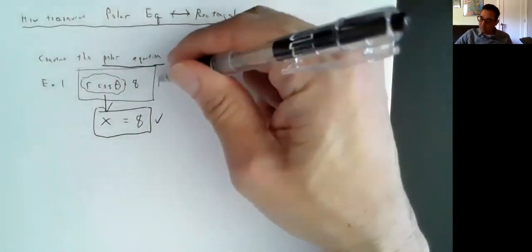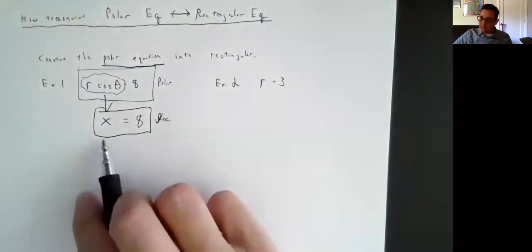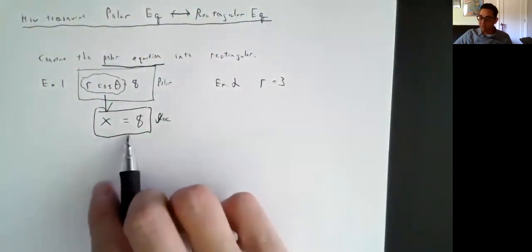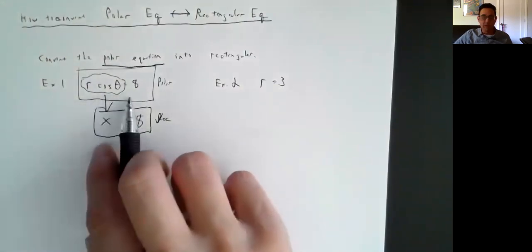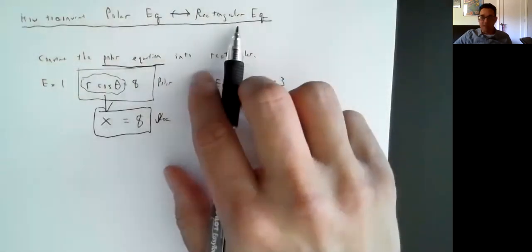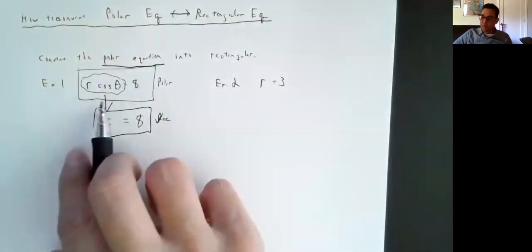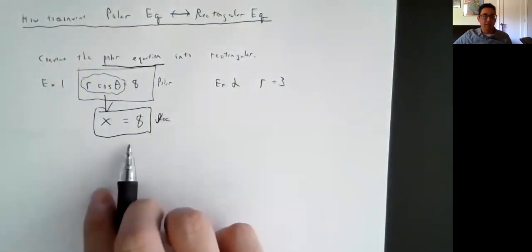This is the polar version, and this is the rectangular version — REC for rectangular — meaning it's in terms of x and y, which is just a vertical line. So now you know that if you put this on a polar grid, it would just be a vertical line. Polar grids can still have straight lines in them; they're just a little harder to work with. Just as rectangular graphs can have curves, you can have a polar graph with straight lines.